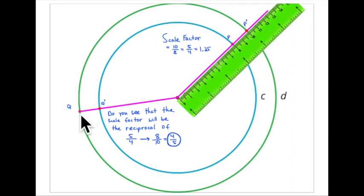Going backwards in the other direction, it's the reciprocal — four-fifths. That concludes problem number one.